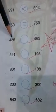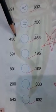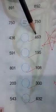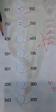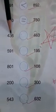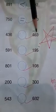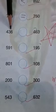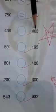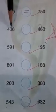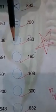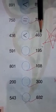Now 436 and 463. The 100s are the same. In the 10s place we have 3 tens and 6 tens, and 3 tens is less than 6 tens. So 436 is less than 463.